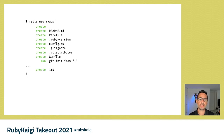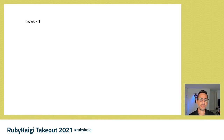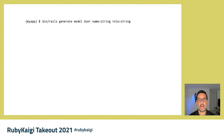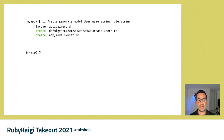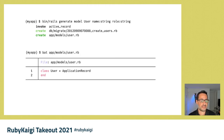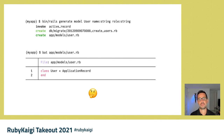But what good is an empty Rails application? So I created a user model with two string attributes, name and role. After the generator was done, I opened the user.rb file with excitement and found an empty class definition.